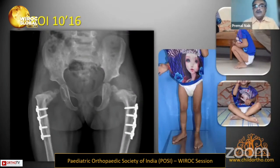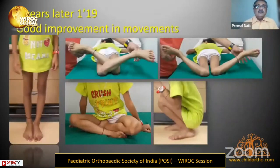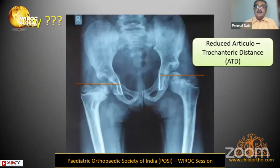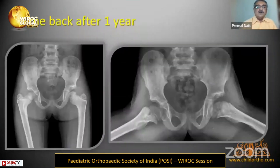She had removal of implant about a year later, at which point the trochanter had not appeared, so I could not do trochanteric epiphysiodesis. Three years later when she came back she had an excellent range of movements, but the X-ray showed reduced articular trochanteric distance, so I suggested trochanteric fusion.